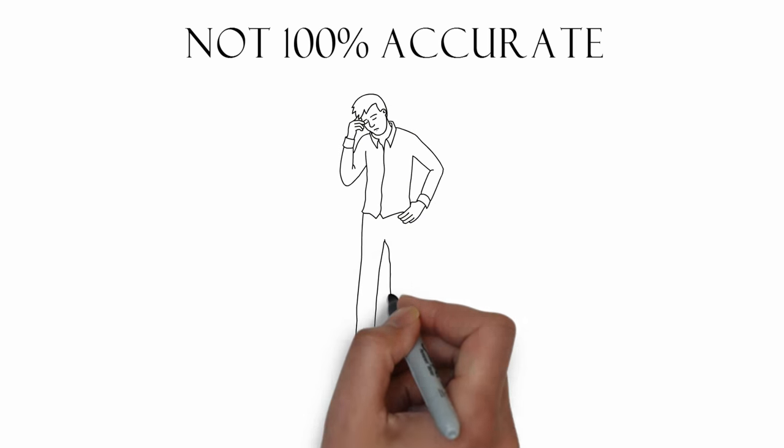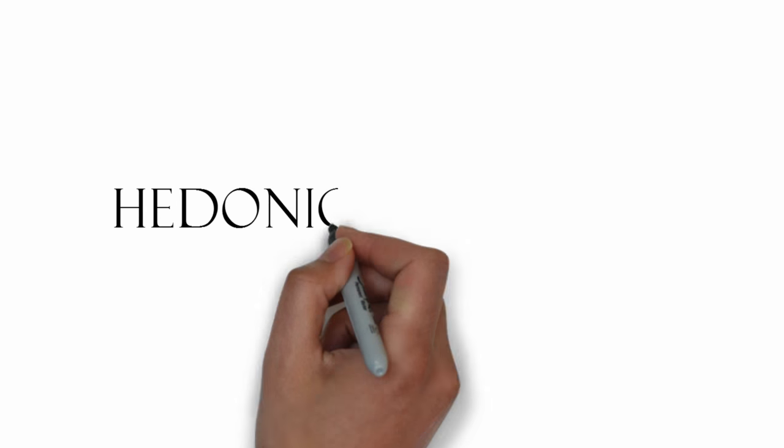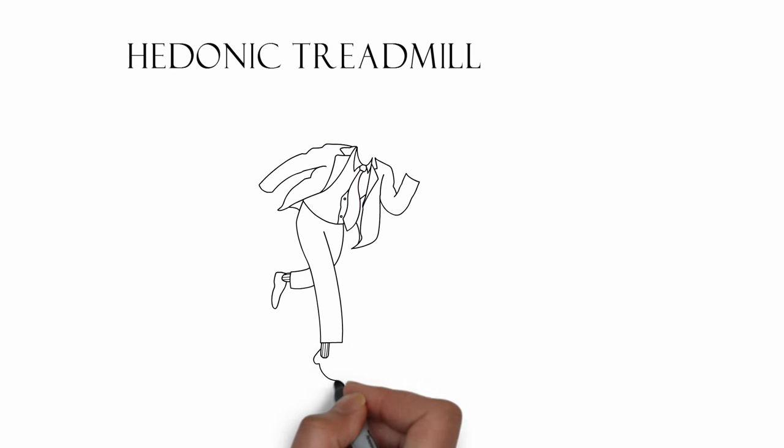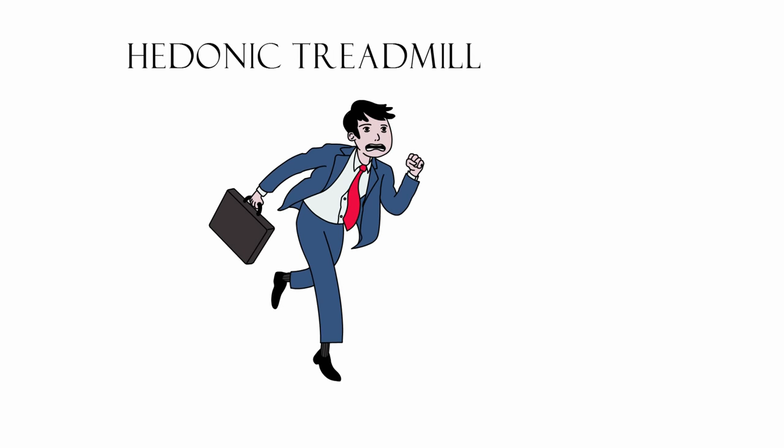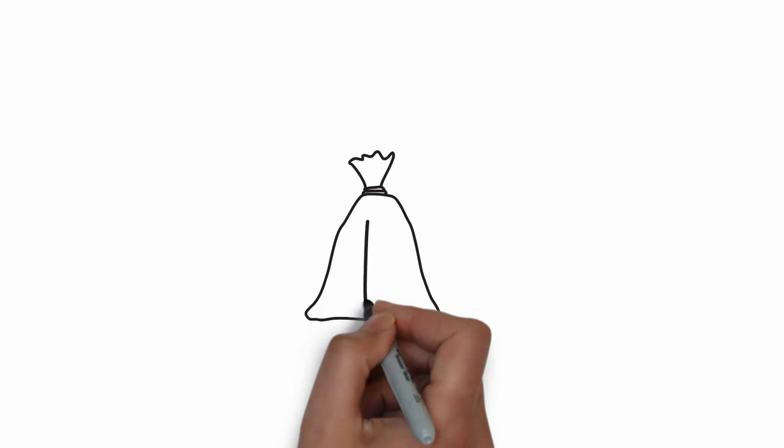Hedonic adaptation is when you get used to new circumstances. If you were to win ten million dollars right now, you'll be happy for perhaps the first six months, and then life will return to normal.